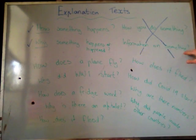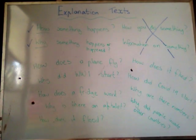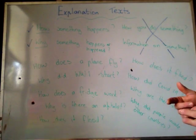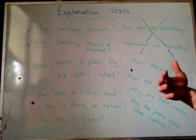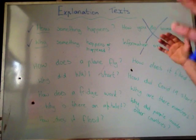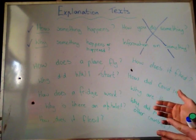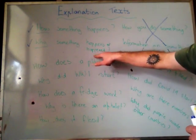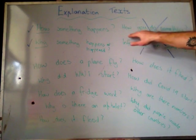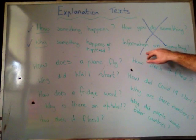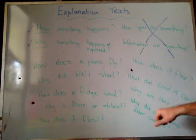The other way people get confused is that explanation text is very close to an information report. If you've just got random facts about something — for example, on how a clock works, you write 'there are 12-hour clocks, 24-hour clocks, there are digital clocks' — you've just given me information about clocks. You've given me the wrong kind of writing because you're just telling me about something. An explanation text is about explaining how and why things happen, not just listing information.